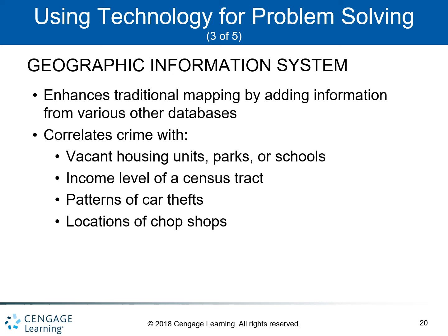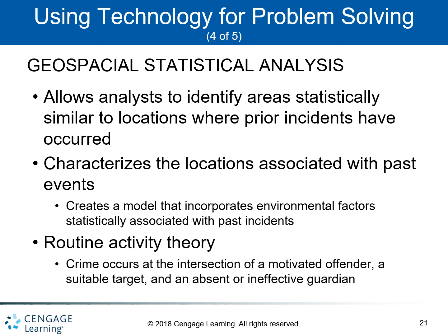Geospatial statistical analysis takes GIS technology a step further by allowing analysts to identify areas within the community. According to routine activity theory, a principle of environmental criminology, a crime occurs at the intersection of a motivated offender, a suitable target, and an absent or ineffective guardian.